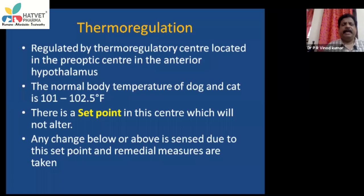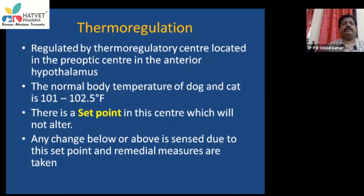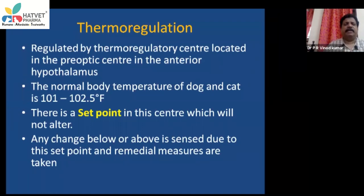The body temperature is regulated by a thermoregulatory center in the brain — specifically in the pre-optic area of the anterior hypothalamus, in the ventral aspect of the cerebrum. Just keep in mind that there is a thermoregulatory center above the hypothalamus. The normal body temperature has a range — for example, 101 to 102.5°F for each animal — and there is a set point determined by this thermostat.